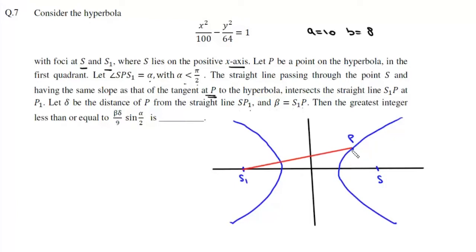Now we will join s1ps, and if we draw a tangent at p, we know that the tangent and normal bisect the focal radius. That means this angle and this angle must be equal.